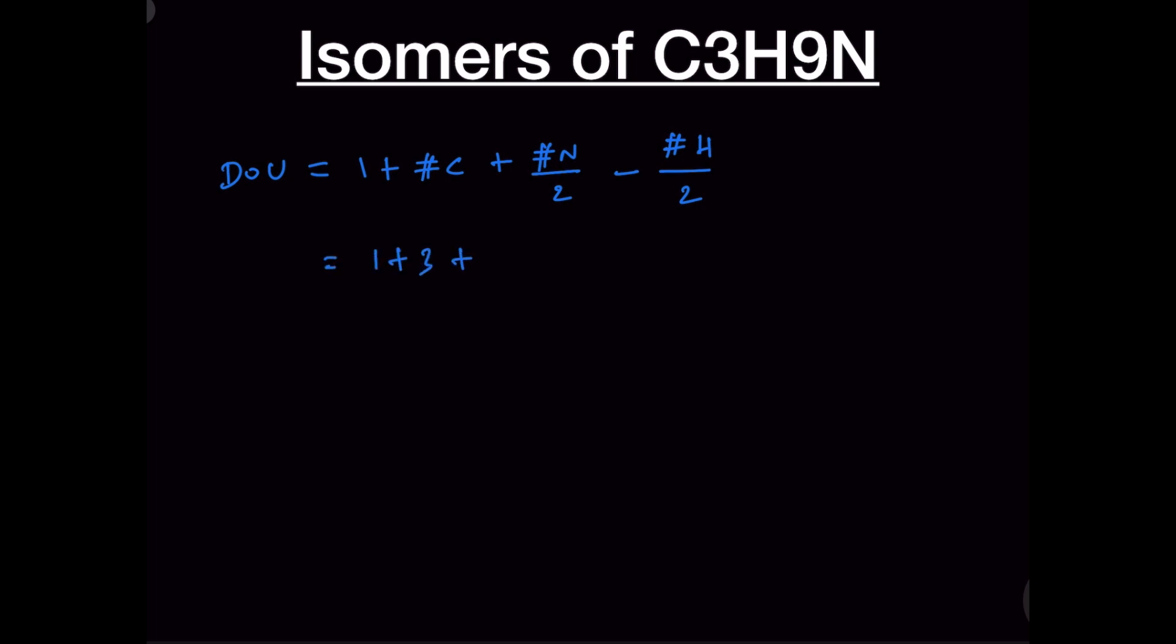Therefore, that is equal to 1 plus 3 plus 1 by 2 minus 9 by 2. This is 4.5 minus 4.5, and therefore the degree of unsaturation in this case is 0.